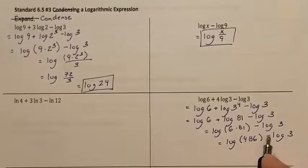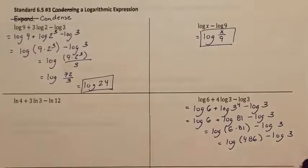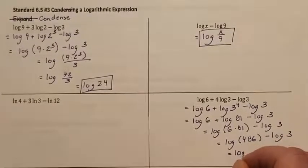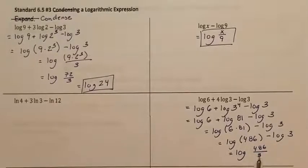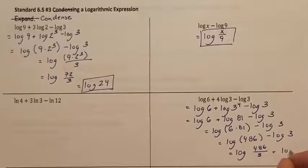If we're condensing a subtracted same base logs, that meant they were dividing. So this is log of 486 divided by 3. 486 divided by 3 does simplify. So this is actually log of 162.